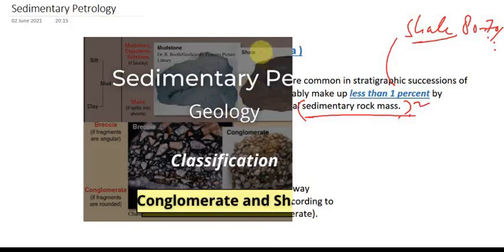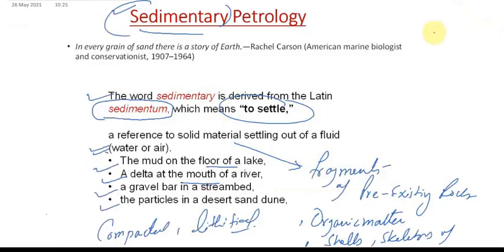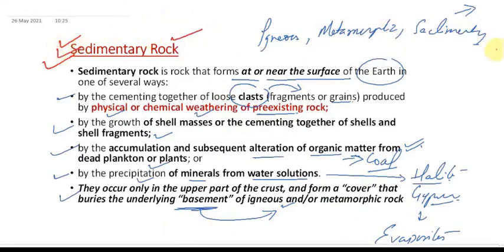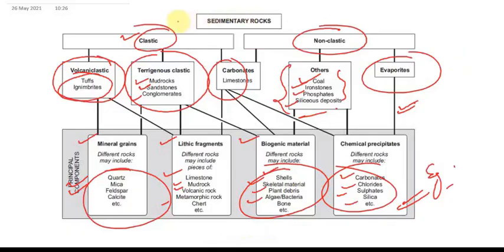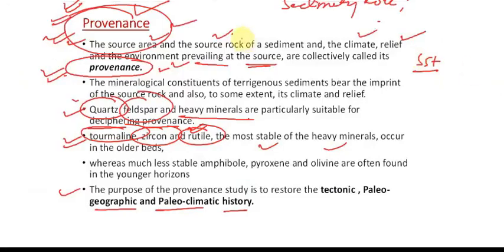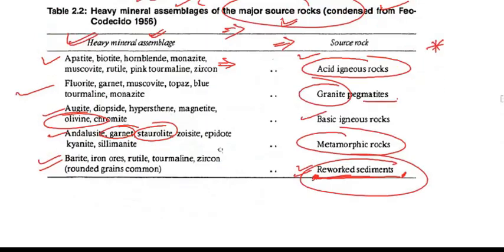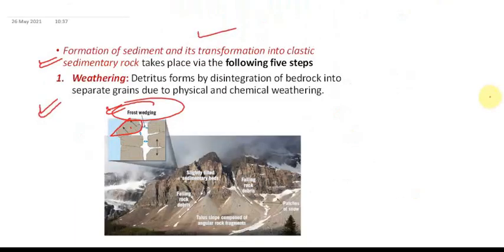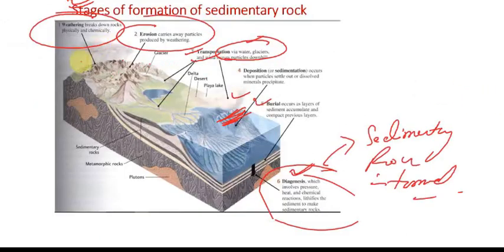Hello everyone, welcome to GeoMind. Today we are going to start Part 2 of sedimentary petrology. In this video we are going to discuss conglomerate and shale. In the previous video, the first lecture of sedimentary petrology, we discussed the introduction to sedimentary rocks, their basic classification such as clastic and non-clastic, and the application of sedimentology — for example, provenance and paleoclimatic history using heavy mineral assemblages. We also discussed the stages of formation of sedimentary rocks: weathering, erosion, transportation, deposition, burial, lithification, and diagenesis.